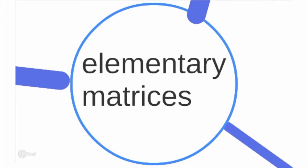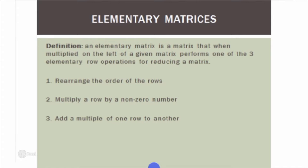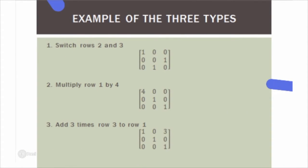Now moving on to elementary matrices. An elementary matrix is a matrix that, when multiplied on the left of a given matrix, performs one of three elementary row operations: (1) rearrange the order of the rows, (2) multiply a row by a non-zero number, or (3) add a multiple of one row to another row. For type 1 — switching rows 2 and 3 — the elementary matrix is essentially the multiplicative identity with rows 2 and 3 switched. Multiplying this on the left of any arbitrary matrix will switch its rows 2 and 3.